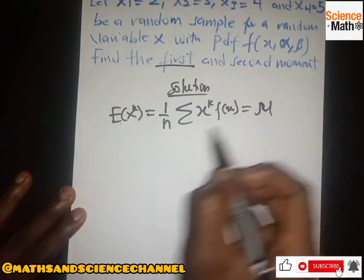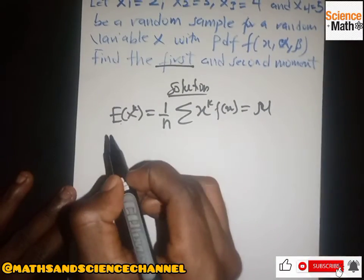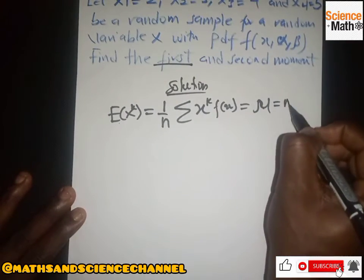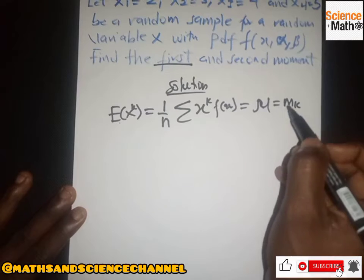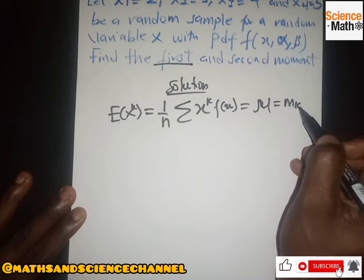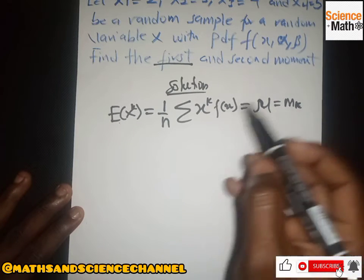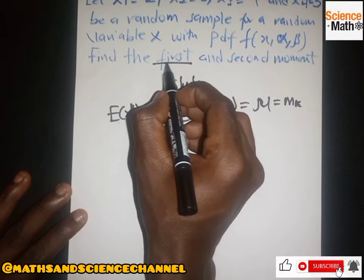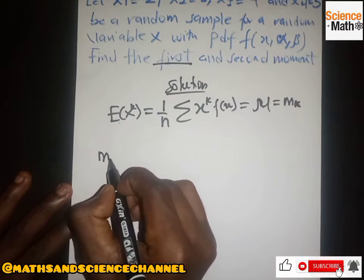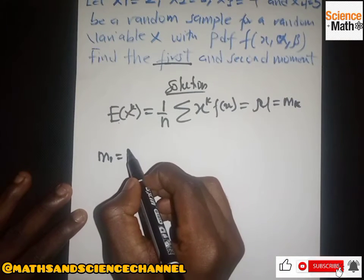The question says we should find the first moment. Remember, all of this is equal to mu because it's basically the mean. The first moment is also equal to mk, which represents the moment, and k represents to which degree you're supposed to find the moment. In this case we have to find the first moment, which is basically m1, equal to mu or X-bar, which is still the mean.